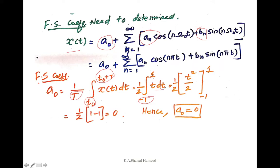When you integrate this, you get 1 by 2 times t squared by 2, with upper and lower limits 1 and minus 1. Substituting the upper and lower limits, you get 1 minus 1 equal to 0. So a naught is equal to 0.